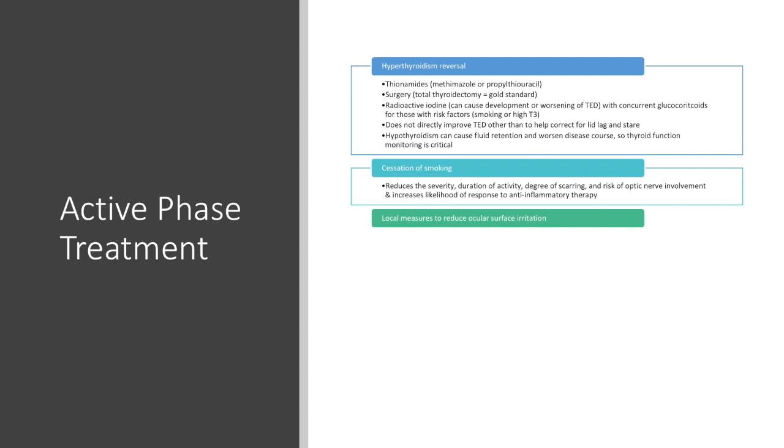Measures more local to the eye can be used to reduce ocular surface irritation. Photophobia and sensitivity to wind or cold air can be relieved by the use of artificial tears and sunglasses, while an elevated head position during sleep can help with the retroocular pressure or pain.